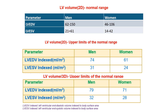Regarding normal dimensions: the left ventricular end-diastolic volume ranges from 62 to 150 mL in males and 46 to 106 mL in females. The left ventricular end-systolic volume ranges from 21 to 61 mL in males and 14 to 42 mL in females. For upper limits of normal indexed parameters from 2D: the LV end-diastolic volume index upper limit is 74 mL/m² in males and 61 mL/m² in females.